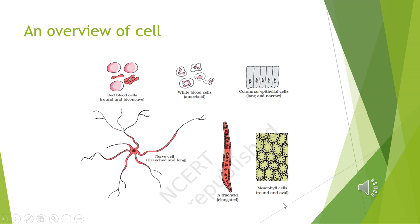In earlier classes you have studied about cells — you have even seen slides of onion peel and cheek cells. The basic differences between plant and animal cells: a plant cell has a cell wall as the outer boundary, and just within it is a cell membrane, whereas animal cells have only a plasma membrane and no cell wall.